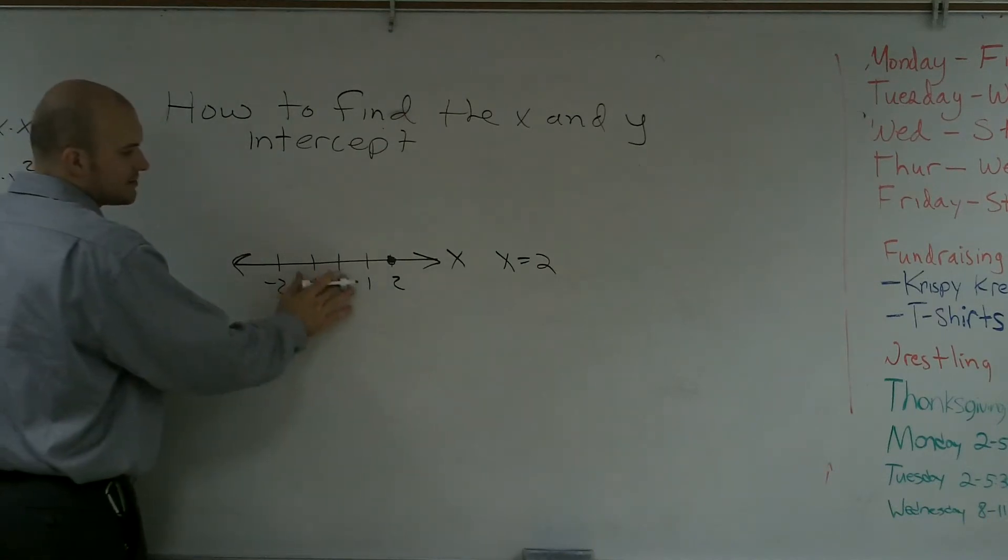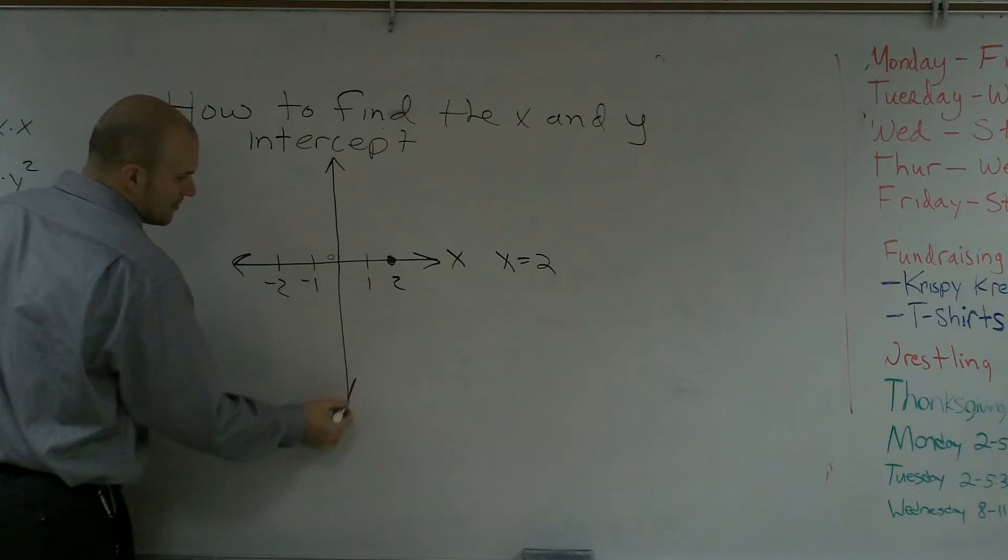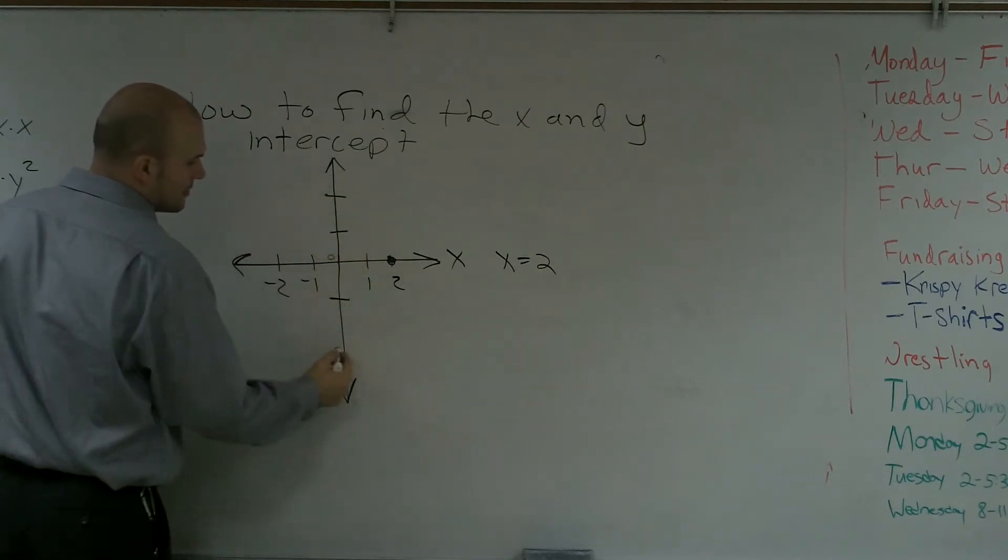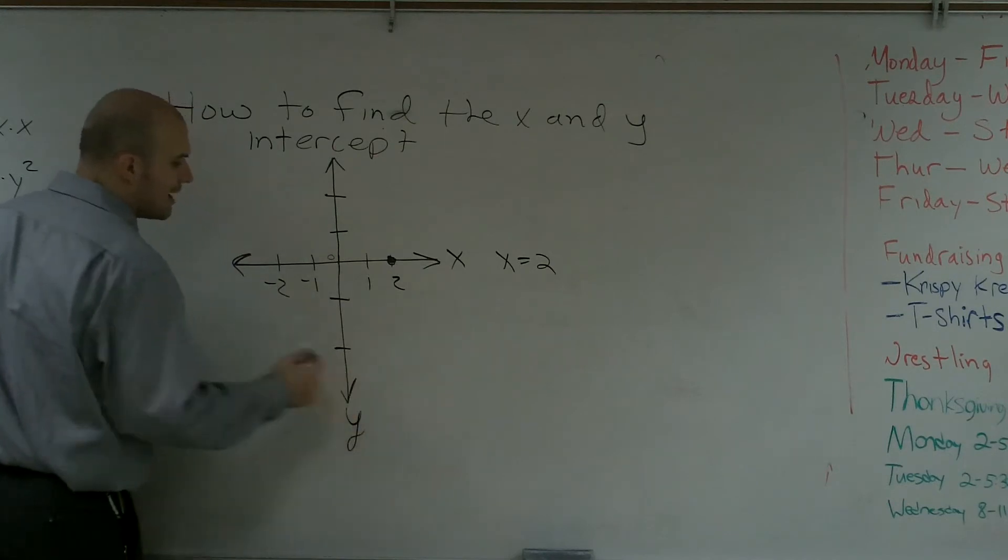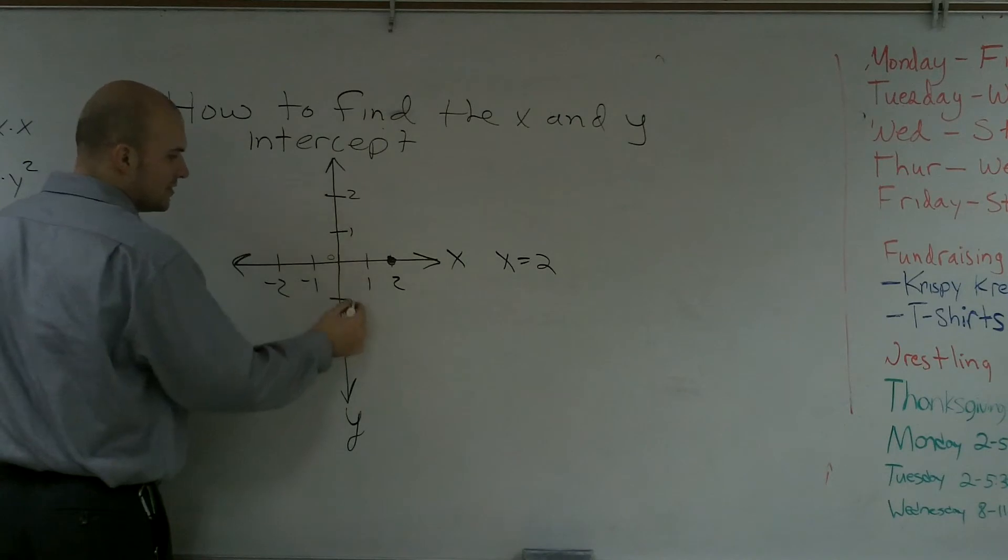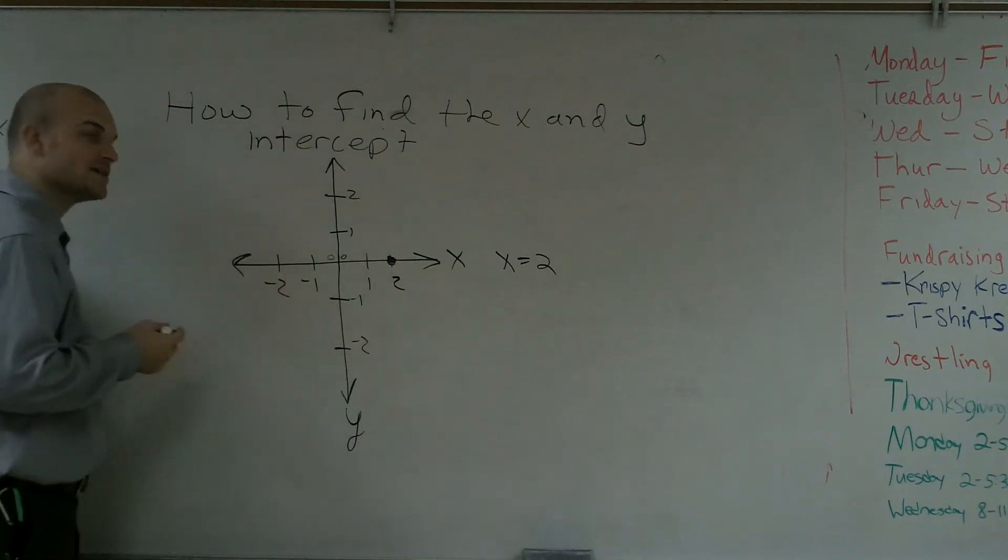Then, now what we're going to do is we're going to create a vertical number line. And this one we're going to call the y. And notice again, that's 1, that's 2, negative 1, negative 2. And notice again, that point on the vertical number line is 0 as well.